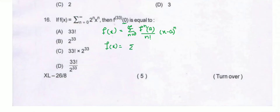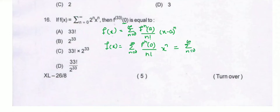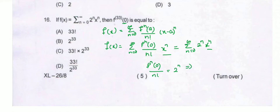So if f(x) equals the summation from n=0 to infinity, comparing with the Taylor series form about x=0, we can identify that the nth derivative of f at point 0 equals n factorial times 2ⁿ. Therefore, f(x) equals the summation of 2ⁿ times xⁿ, and this implies the nth derivative of f at point 0 equals n factorial times 2ⁿ.